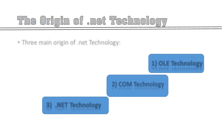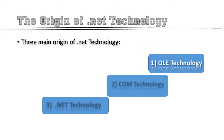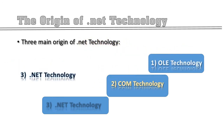Now we move to the origin of .NET technology. The first origin is OLE technology, the second is COM technology, and the last is .NET technology.